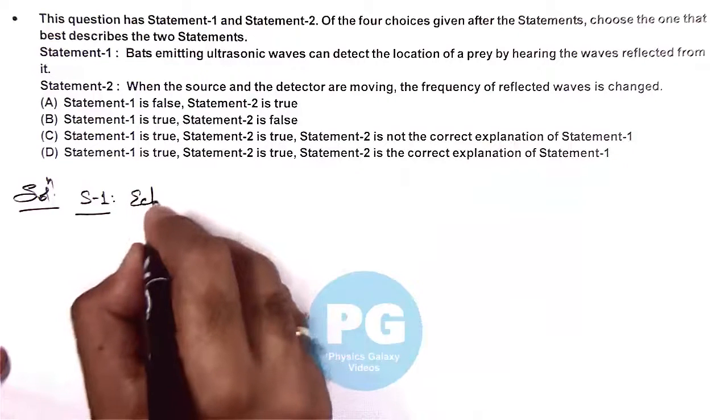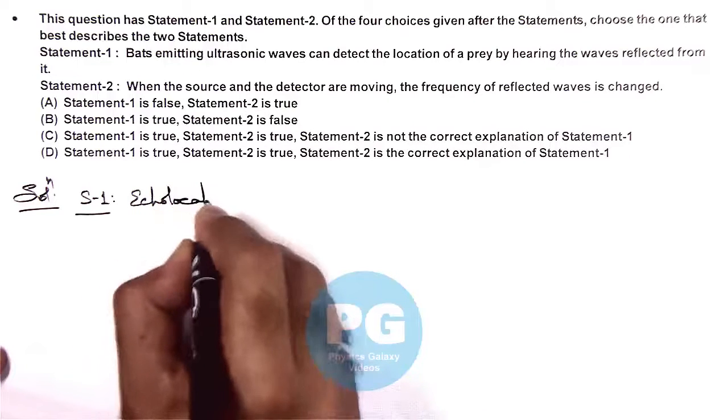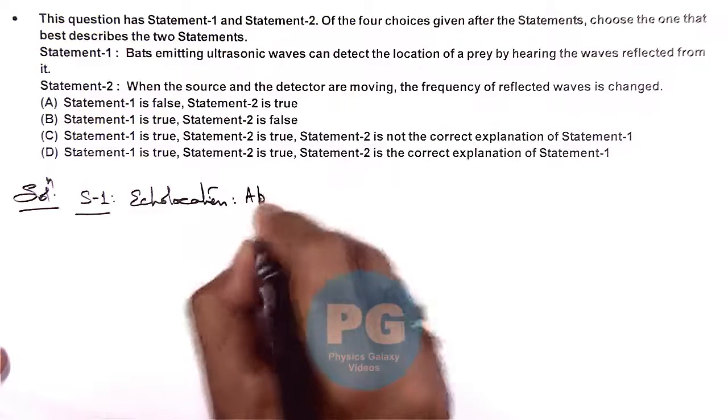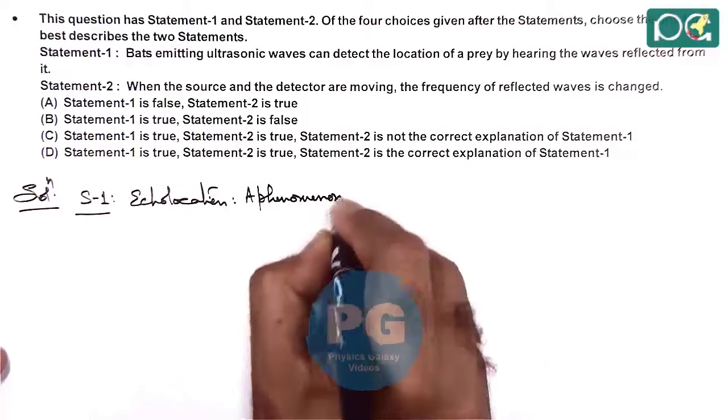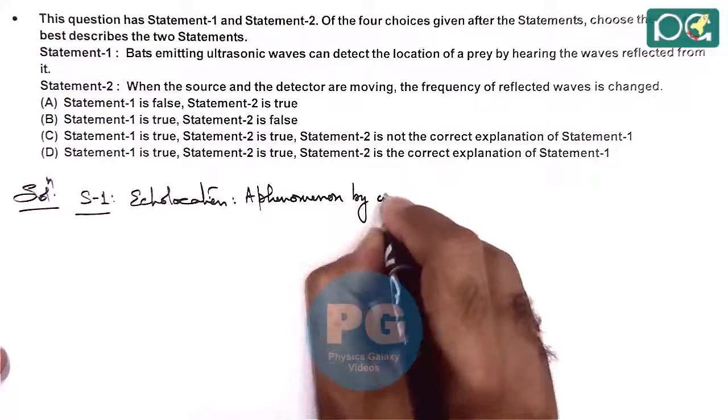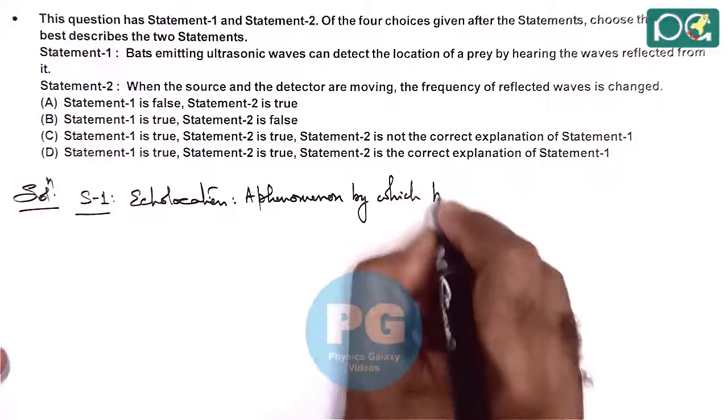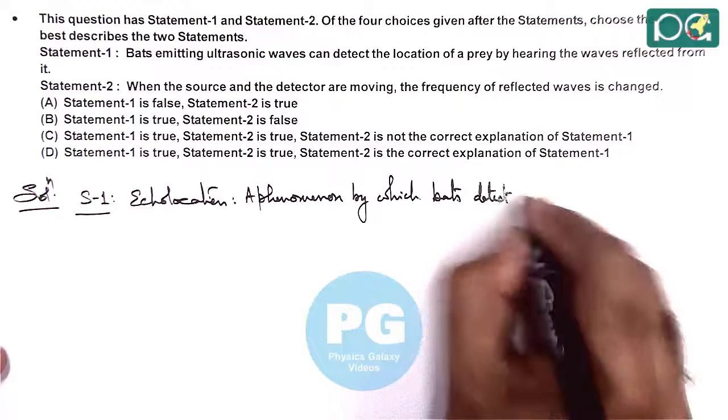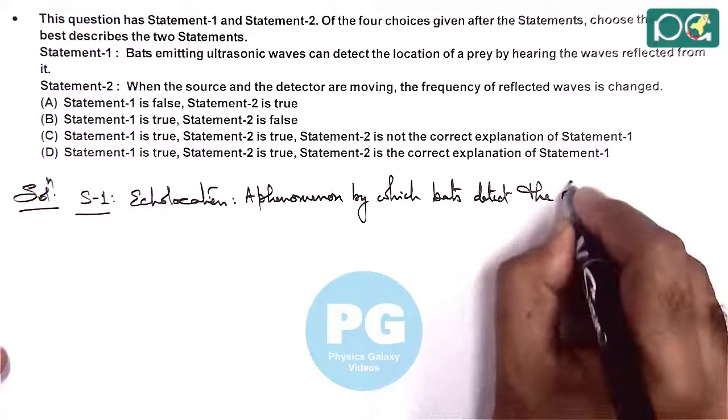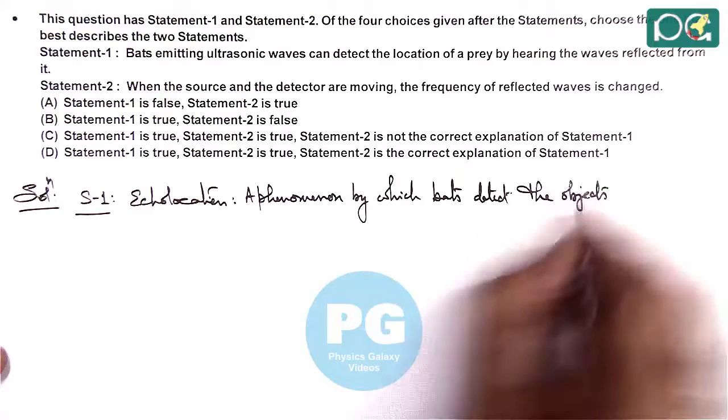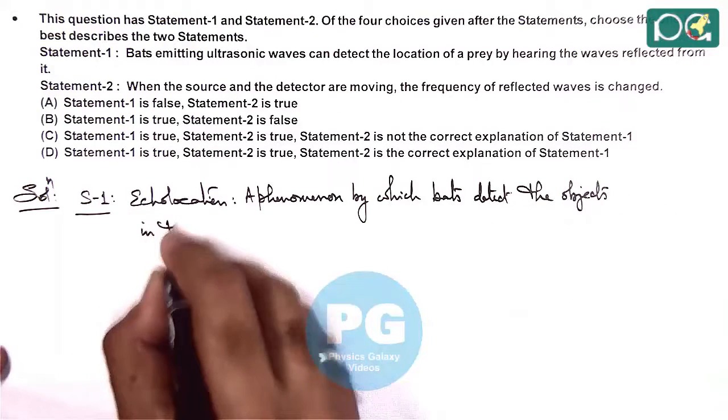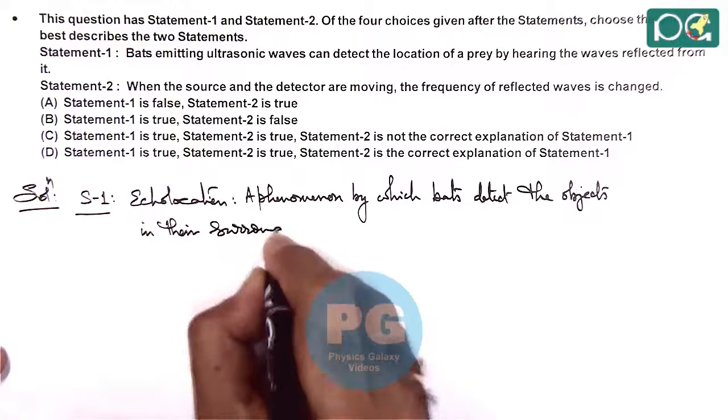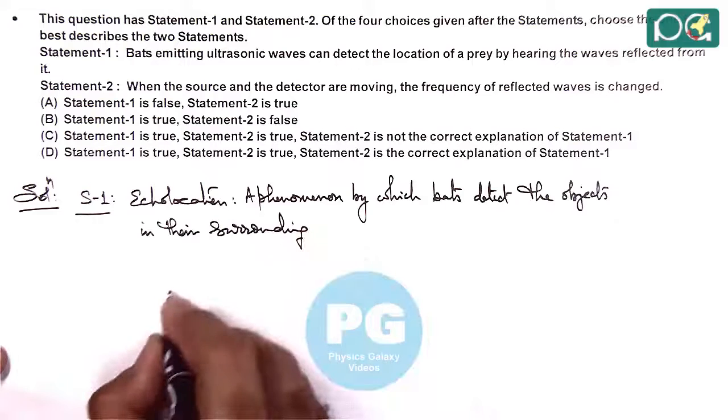The phenomenon is called echolocation, a phenomenon by which bats detect the objects in their surrounding. So if this is a bat and they emit ultrasonic waves in their surrounding, and if there is an object in their surrounding, any object in the surrounding.